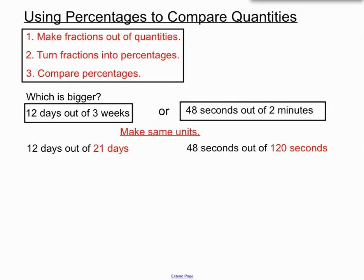Now once they've got the same units there, our next step is to make fractions out of our information here. So 12 days out of 21 days, it's a bit like getting 12 marks out of 21 marks in a test. We can make a fraction out of that. So we have 12 days on top over 21 days. So we'll make a fraction 12 over 21 there. We can do a similar thing with the right hand side quantities there. 48 seconds out of 120 seconds. So we've formed a couple of fractions here.